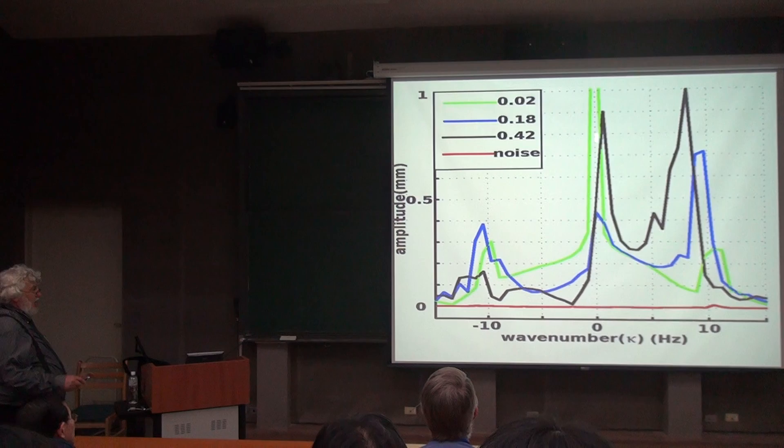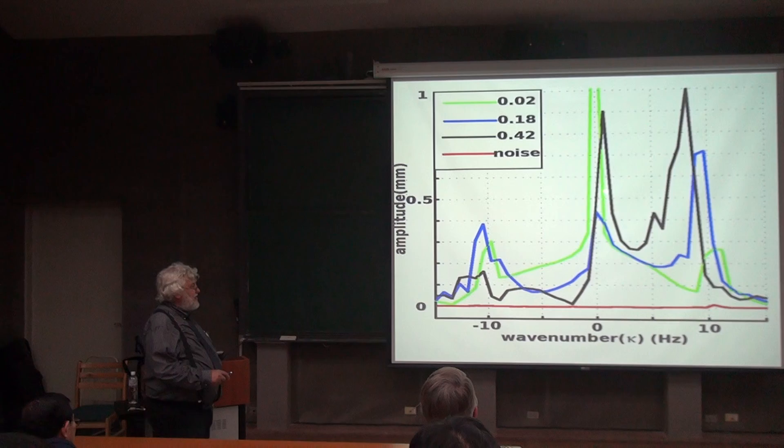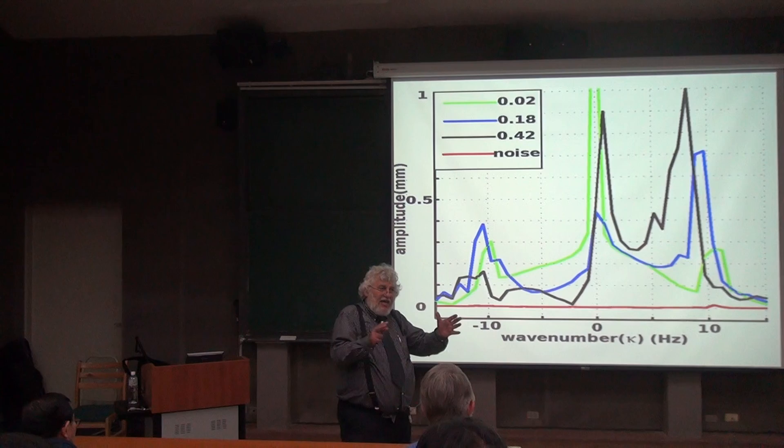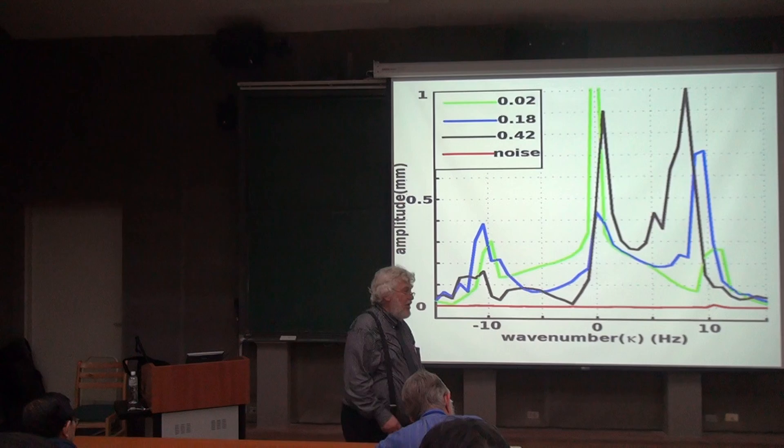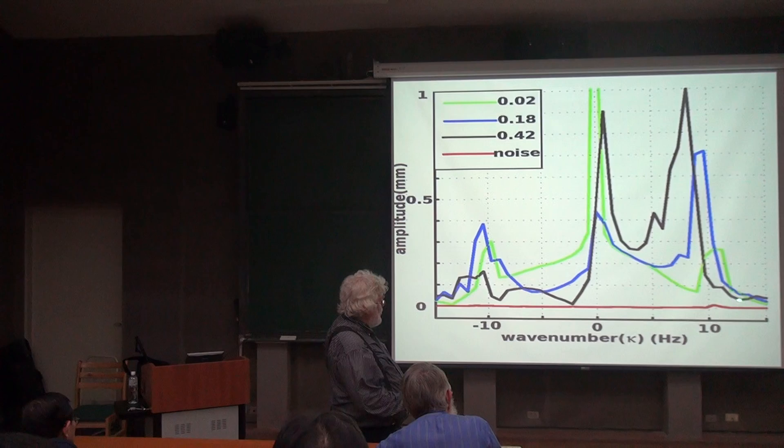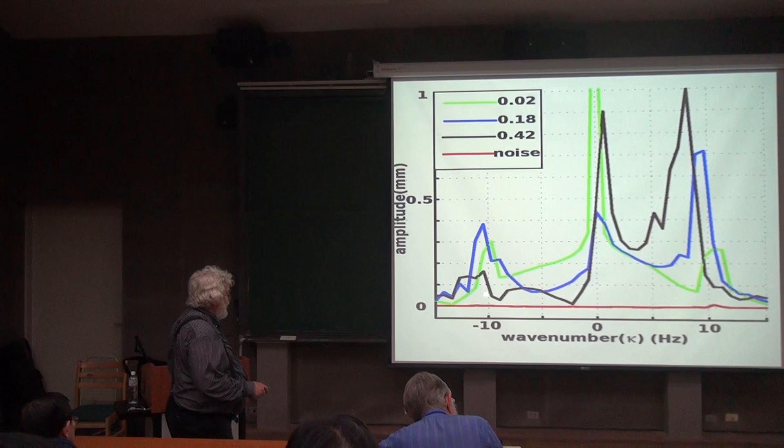However, when the waves come near that white hole horizon, their frequency gets shifted up, their wavelength gets compressed, until finally it's compressed so much that now the velocity of the wave is less than the velocity of the fluid, and it gets swept upstream. So these are the waves that come out being swept upstream. And we notice that there are two different kinds of waves.